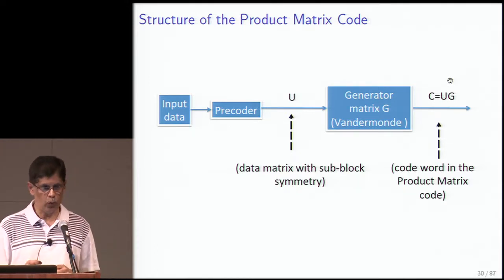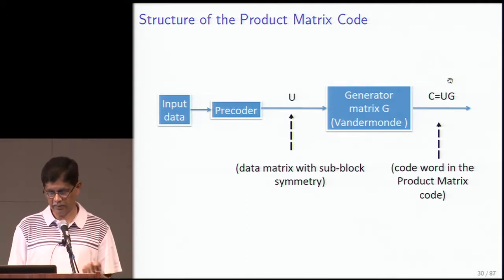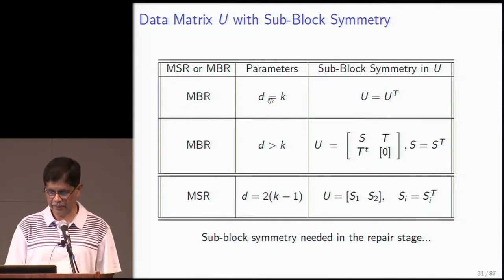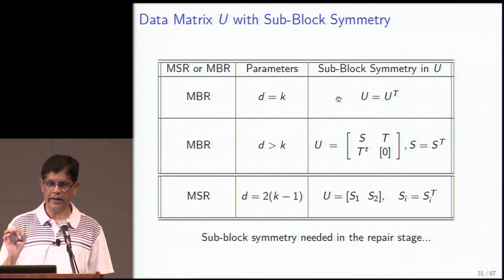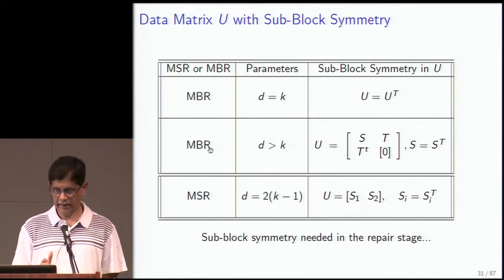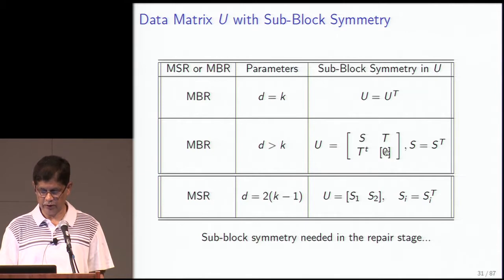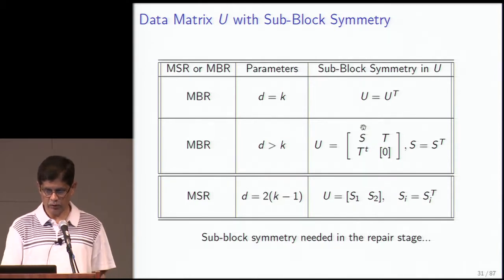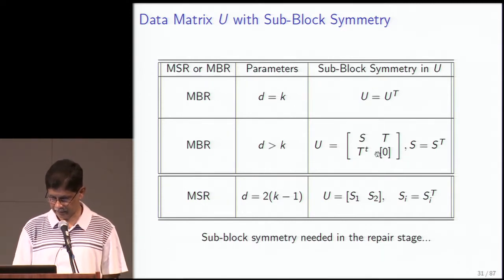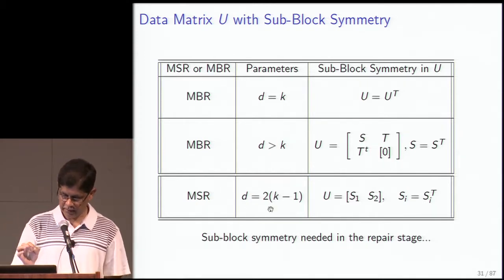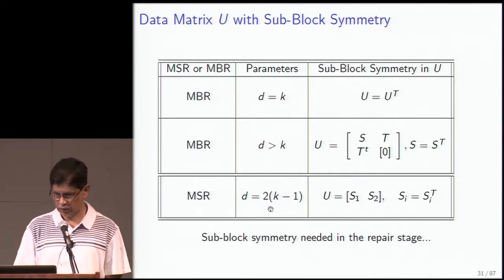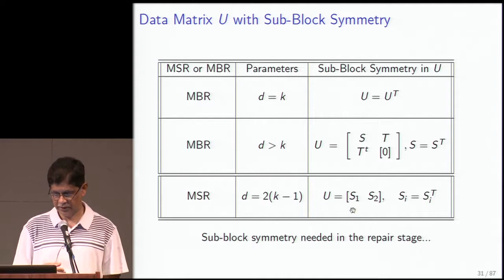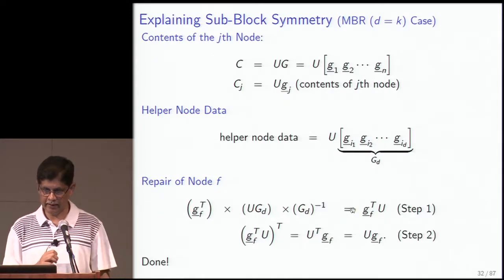For MBR with d > k, the matrix introduces zeros in the right-hand corner — the overall matrix remains symmetric via sub-block symmetry. For the MSR case, for the canonical case d = 2k − 1 the data matrix takes the form [S1 | S2] where each S_i is symmetric. The reason symmetry matters is node repair. Your code is C = U·G, and the columns of G are g_1 through g_n, so the contents of the j-th node are U·g_j. Repair introduces a new twist where you operate from left versus right, and symmetric matrices handle these equivalently.